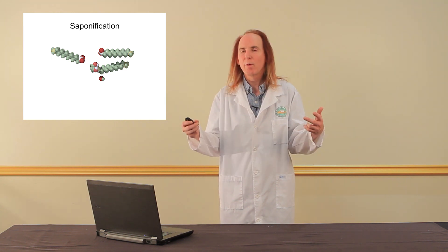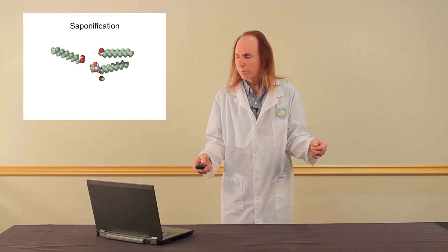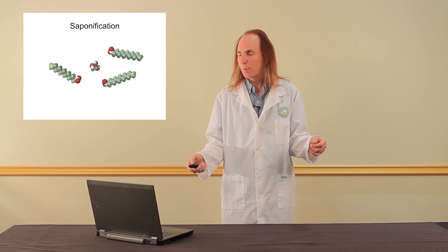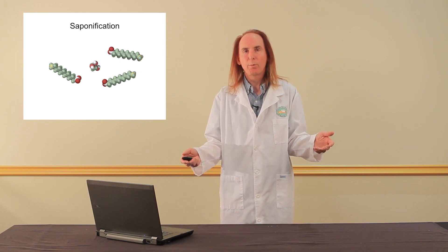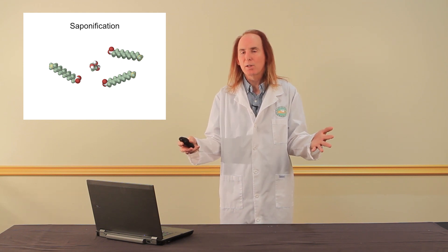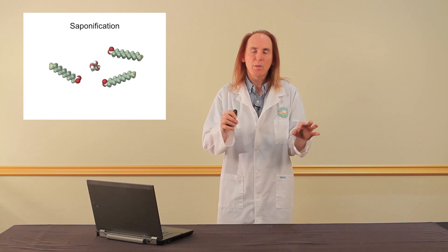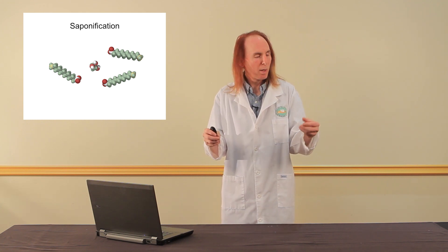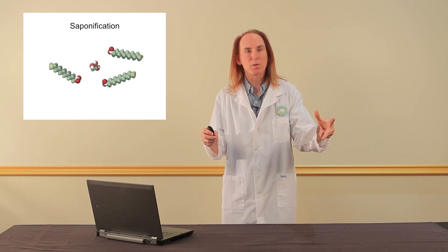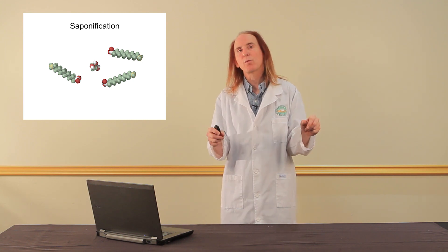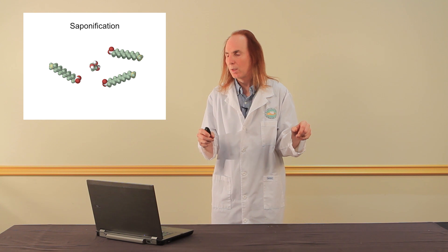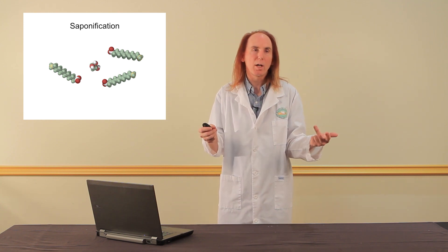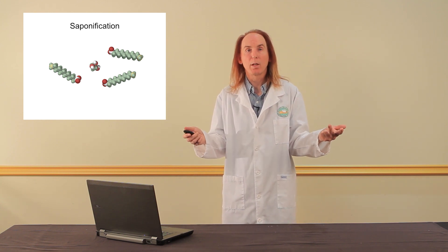The second one is going to move in for the attack. Bink. There it went. I now have a second finger amputated. And finally the third one comes in. Bink. And now I've finished. Three hydroxides came in. They attacked the three white atoms in the center of the glycerol trilaurate molecule. They amputated the three fingers on the molecule. Each of those fingers is now a soap molecule, and what's left behind where the knuckle used to be is a glycerin molecule.